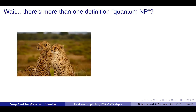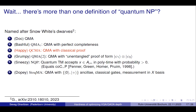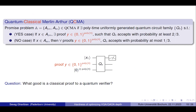In the quantum world, there's more than one definition of quantum NP — we have quite a lot of them. I can name them after the dwarves in Snow White, we really have that many. But here's QCMA — this is exactly QMA, with the only difference that the proof is now a classical string. In the yes case, there is a good classical string you could feed in that makes the verifier accept with high probability. In the no case, for all proofs, this thing rejects with high probability.